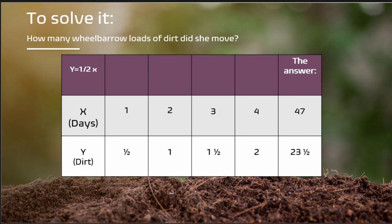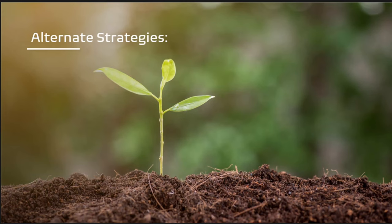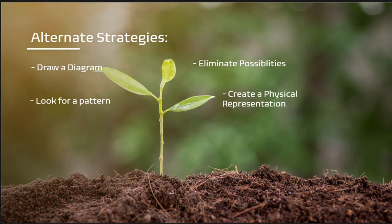I worked this a little differently on paper by adding all of the fractions together. When you add one-third plus two-thirds you get one whole. When you add one-fourth plus two-fourths plus three-fourths you get one and a half, and so on. Some alternate strategies include: draw a diagram, look for a pattern, eliminate possibilities, or create a physical representation — which I like, because you can have students physically moving water or sand one by one, filling a container back and forth just as Jodi did, marking the container to see how it fills up and measuring the increments — as well as converting to algebra.